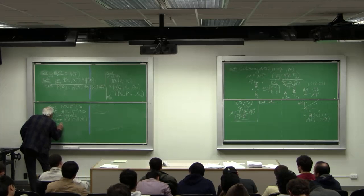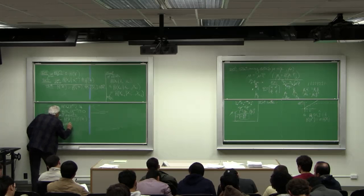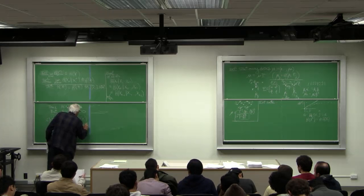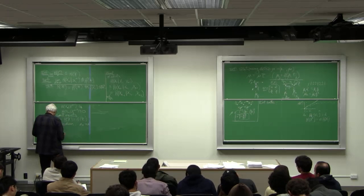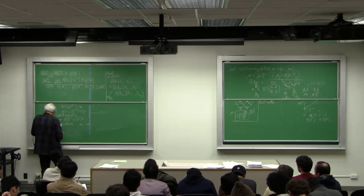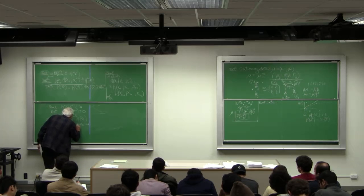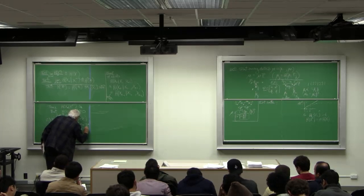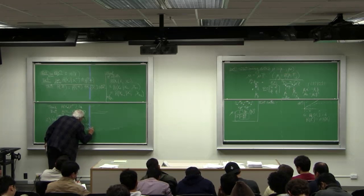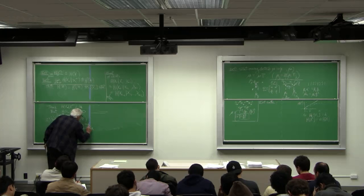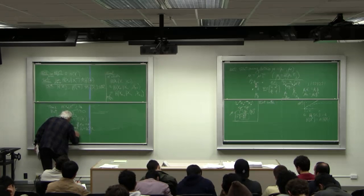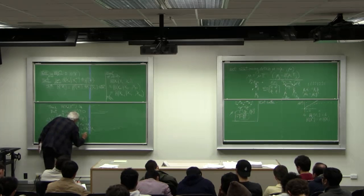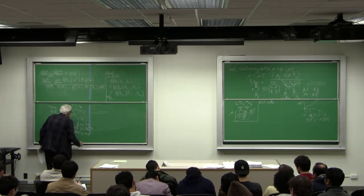The Cesaro mean theorem says if a_n converges to a, and b_n equals 1 over n summation of a_i from i equals 1 to n, then b_n converges to a, the same limit.